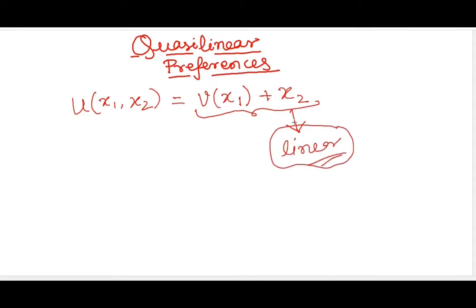This logic when one good has a linear component to calculate the utility for overall two good structure, we call that quasilinear preferences.